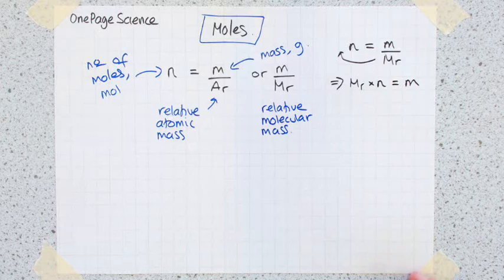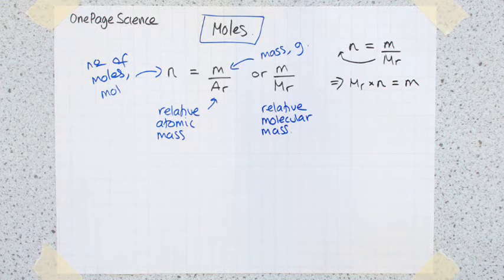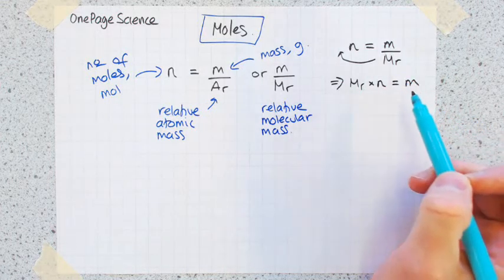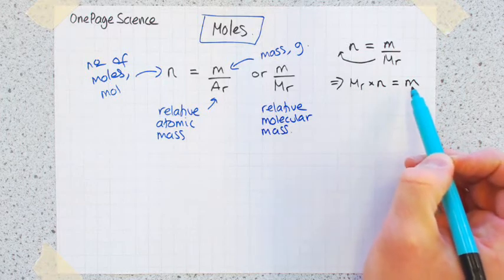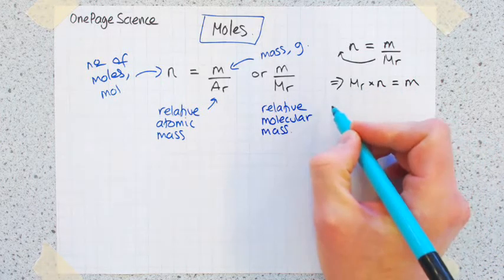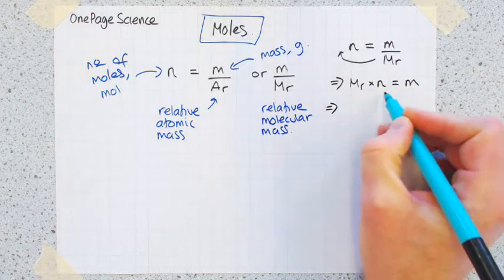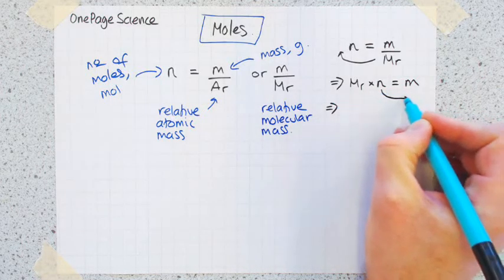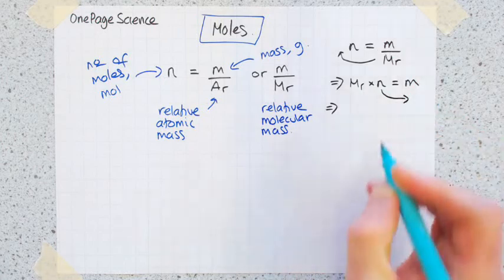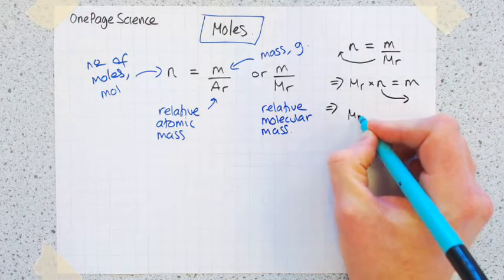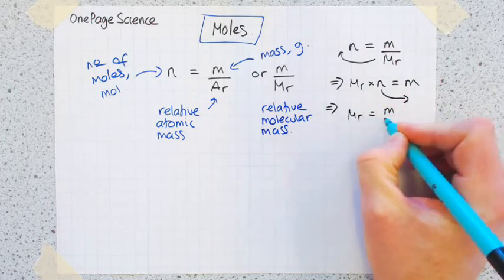The second rearrangement, not needed quite so much for GCSE but I'll show you here anyway, is that sometimes you might want to work out the Mr - you might know the number of moles, you might know the mass, but it's the Mr that you want to work out. So we're going to take the n and bring it down to there to give us Mr equals m over n.